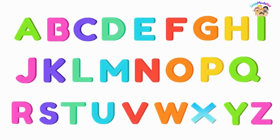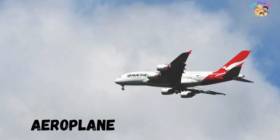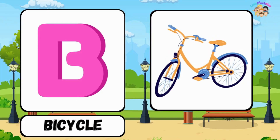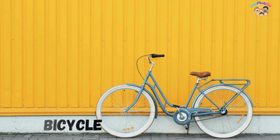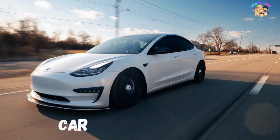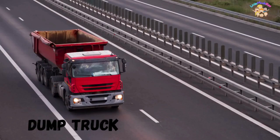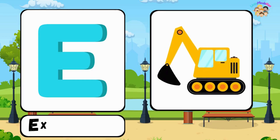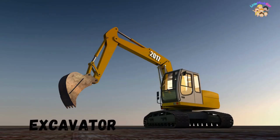A to Z Transport names. A for airplane, B for bicycle, C for car, D for dump truck, E for excavator.